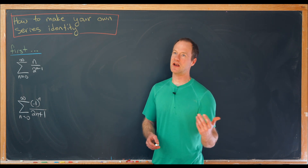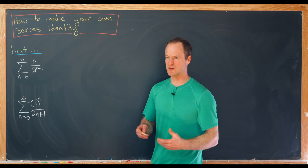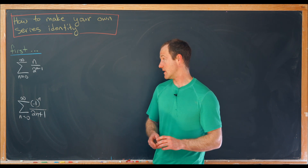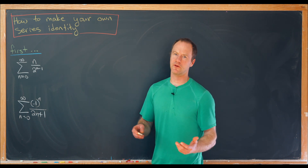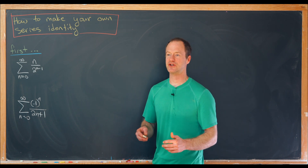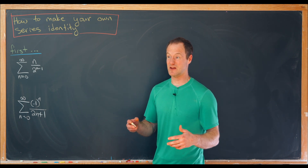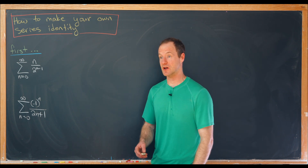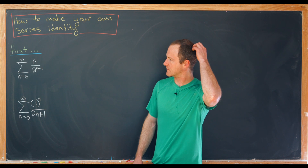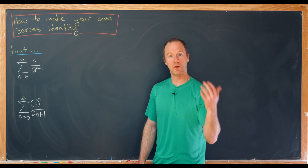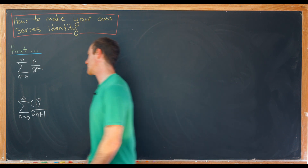I'll derive closed forms of these using a straightforward direct method that is a bit cleaner, although that kind of kills some of the intuition. I think it's a nice presentation of the derivation. Then after we've got closed forms of those, we'll put them together to build our own series identity.